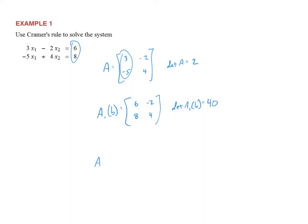Then A subscript 2 of B: I go back to my original column 1, which is 3, negative 5, and replace column 2 with B, which is 6, 8. The determinant of that matrix: 8 times 3 is 24, minus negative 30. 24 add 30 is 54. So there's my determinant work. Now I can solve the system.